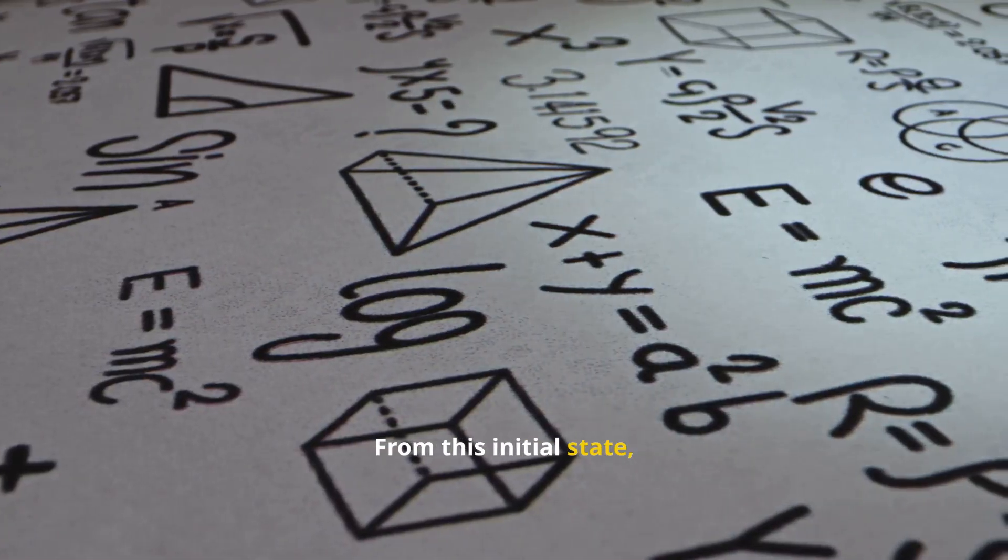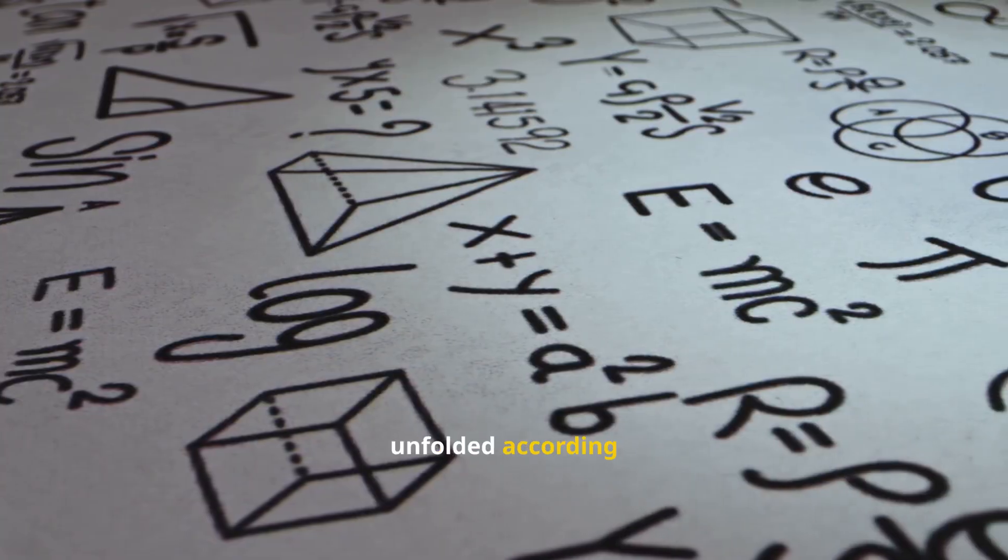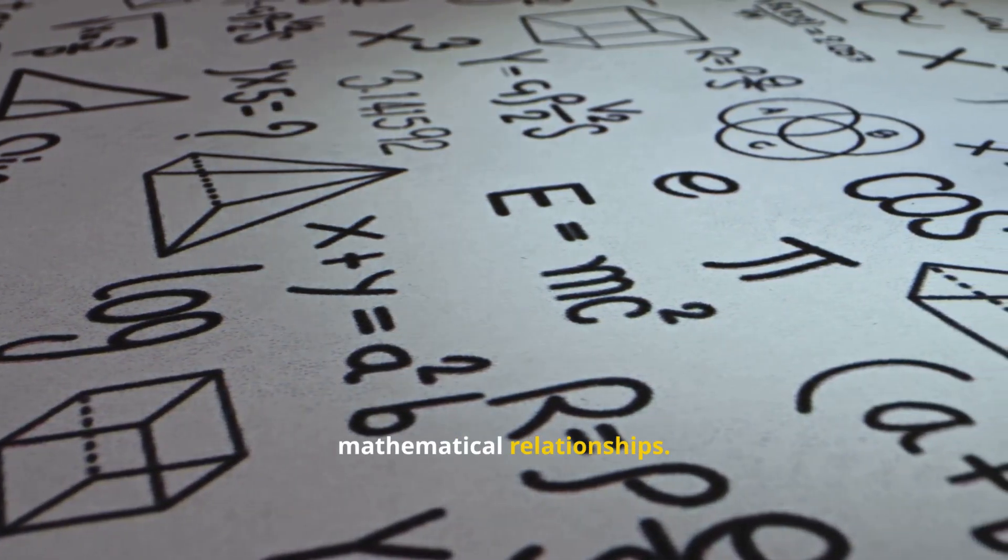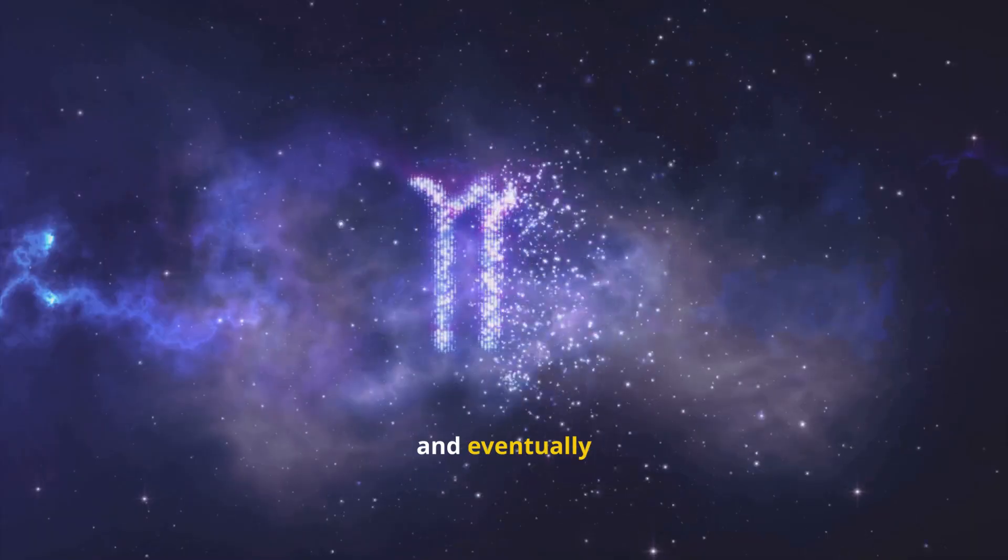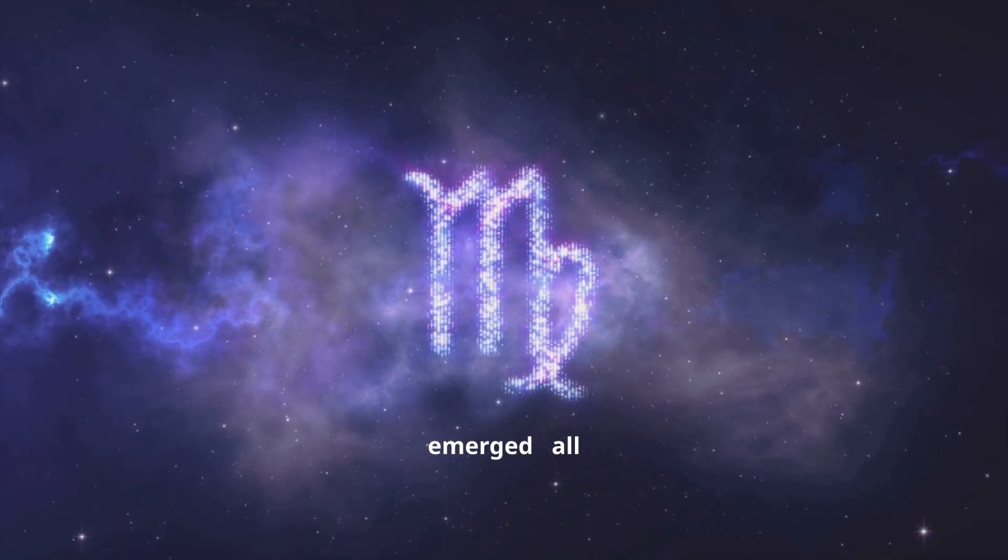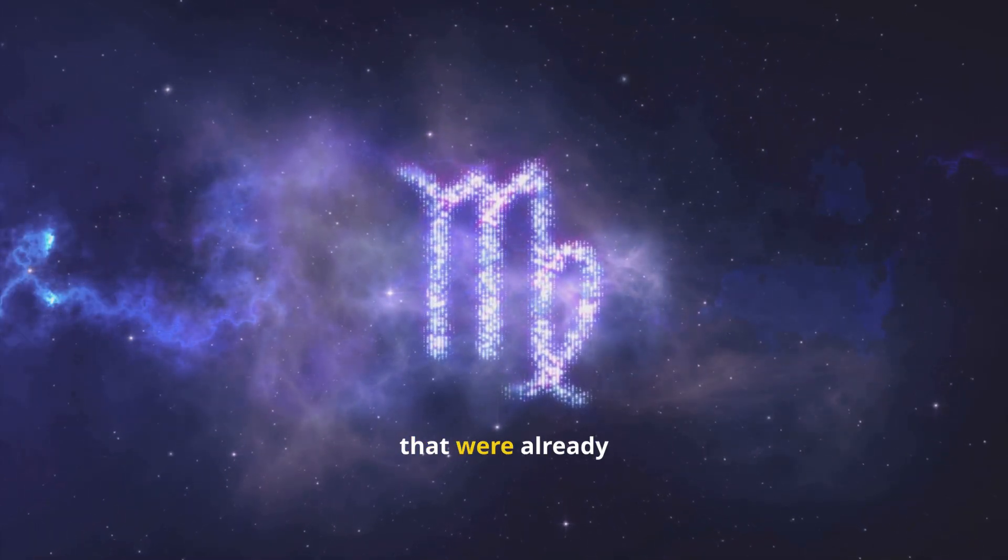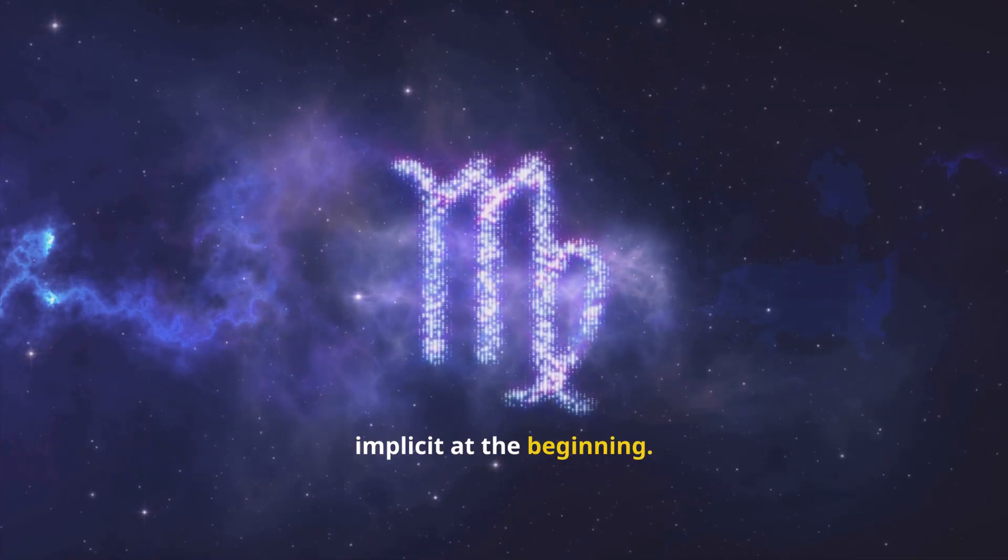From this initial state, the universe unfolded according to precise mathematical relationships. Galaxies formed, stars ignited, and eventually consciousness emerged, all governed by laws that were already implicit at the beginning.